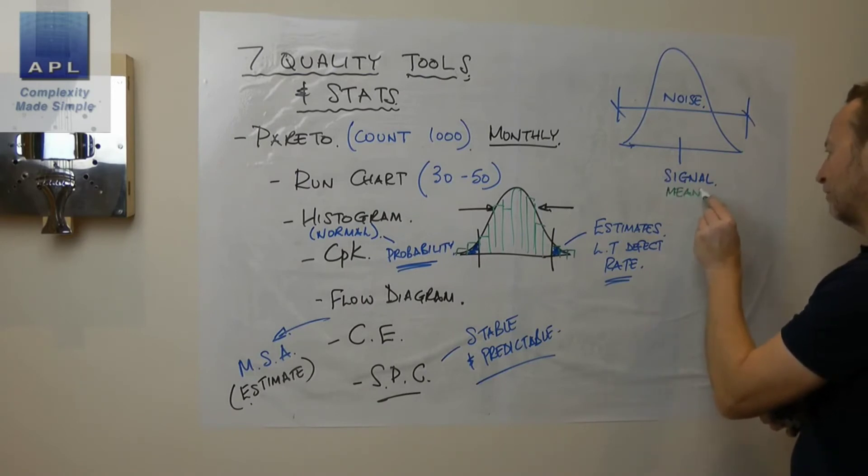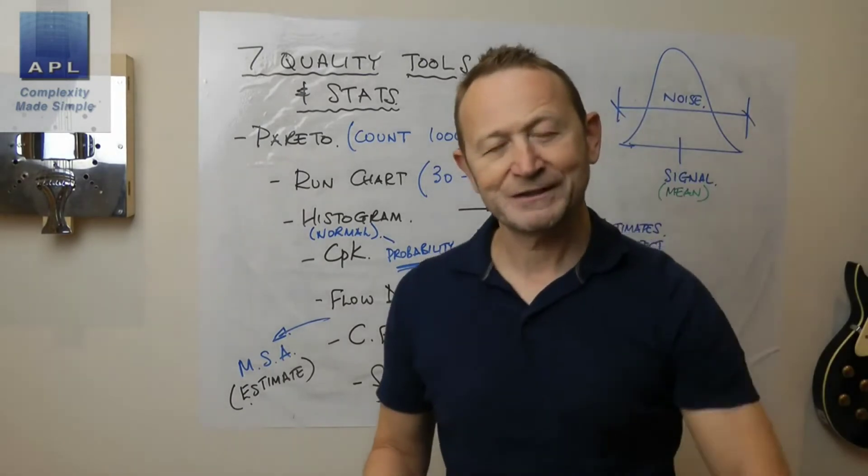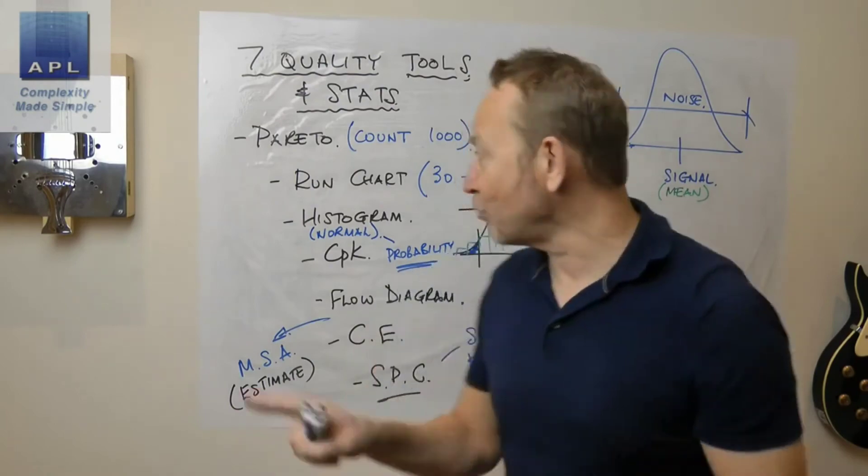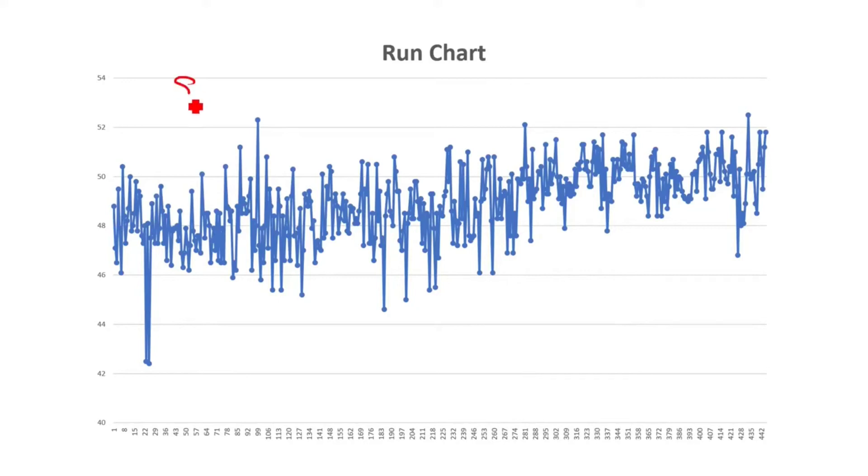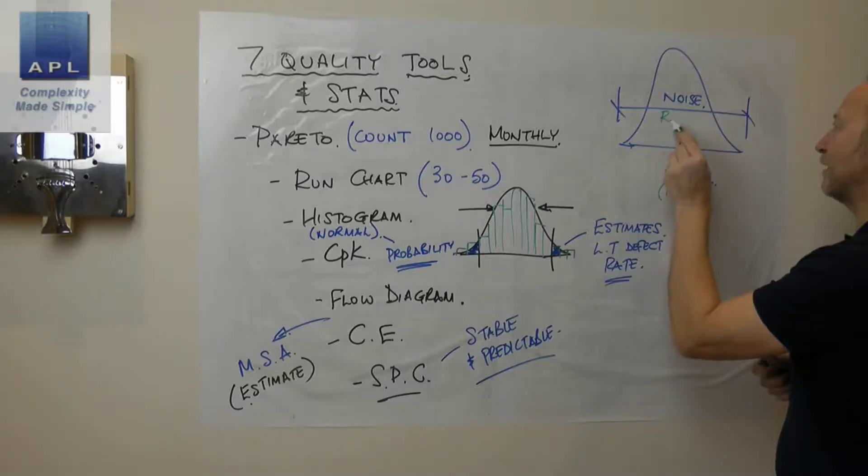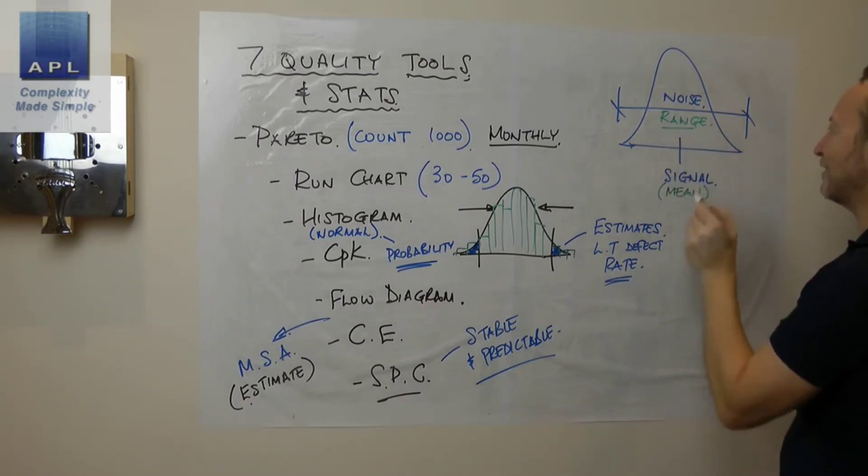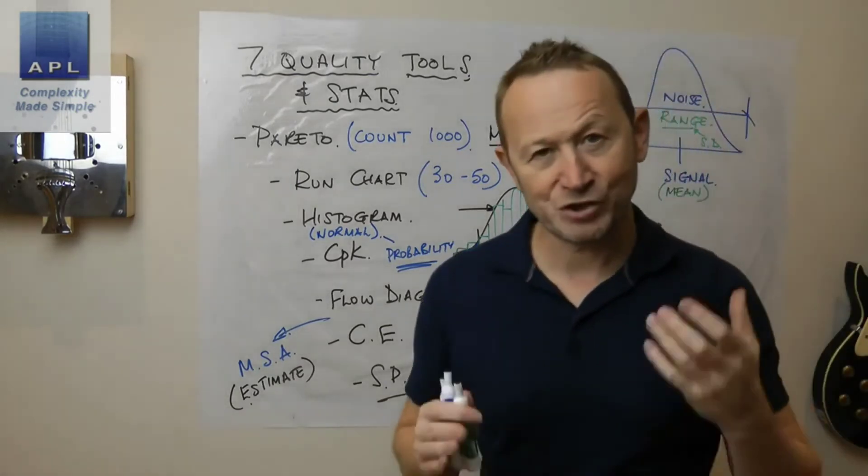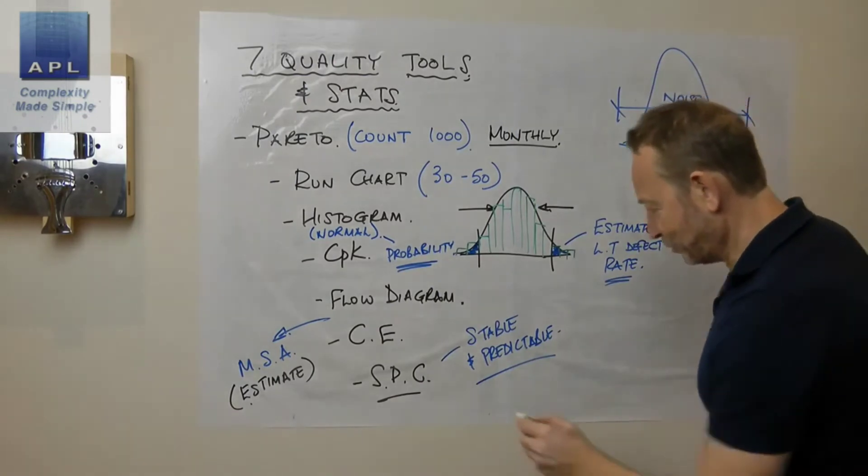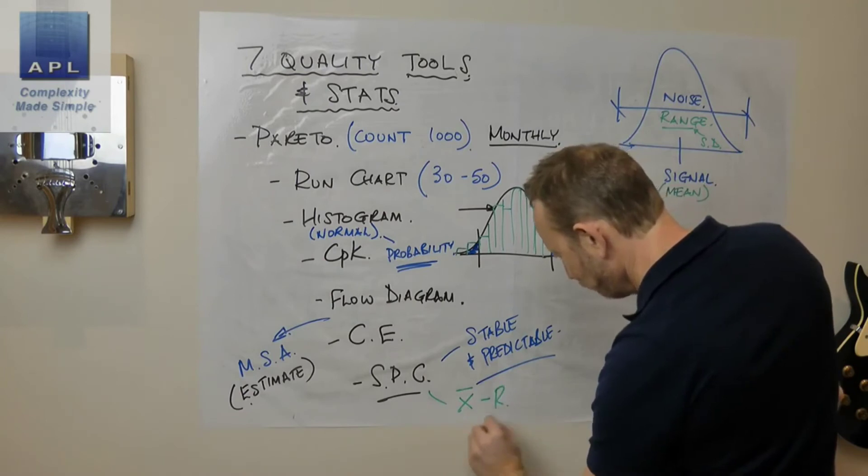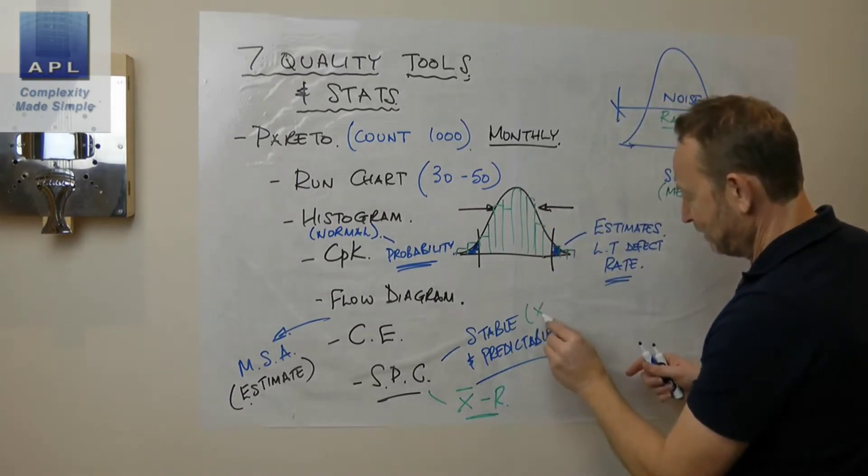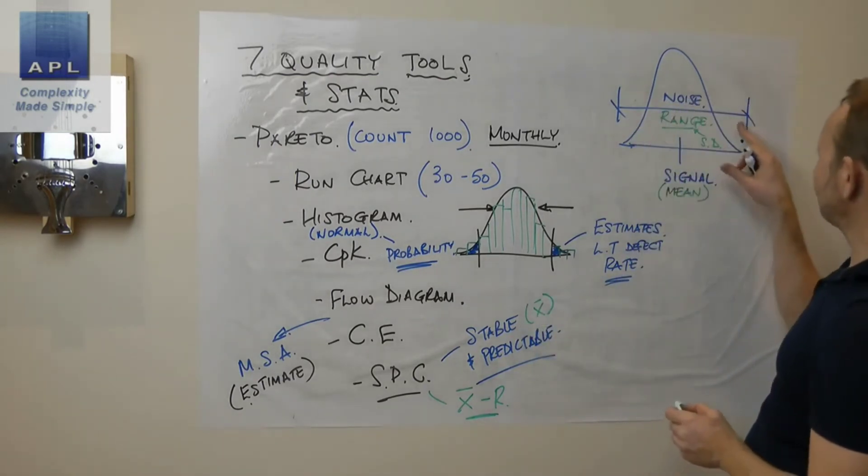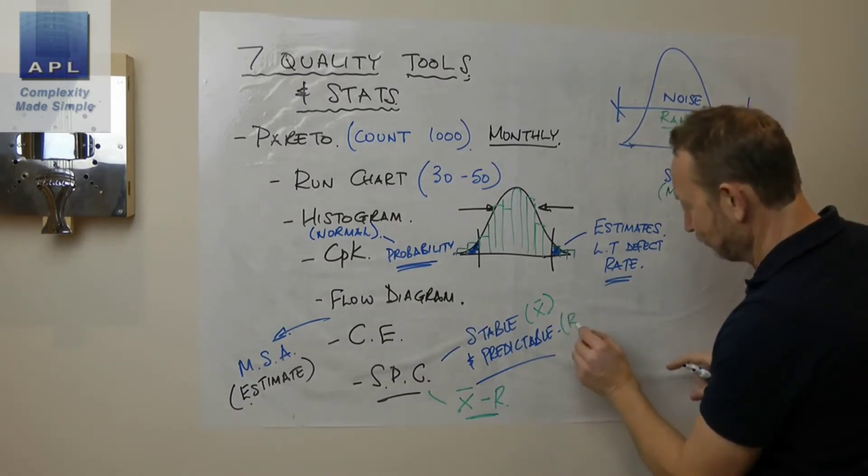When a process is stable, the signal doesn't move. In other words, the average, the mean, stays where it's put. If we look at this data set we looked at earlier, the run chart, I look at the run chart to assess that the process is nice and stable. The other thing I'm looking for is that the noise doesn't move. The noise really is the range. Of course, the way that we assess that is often via standard deviation. Standard deviation and range are both measures of noise. If we do an SPC chart, we are often doing an X-bar R chart. This is stable. The X-bar is checking that the mean doesn't move, the range chart is checking that the noise doesn't move. Stable and predictable.